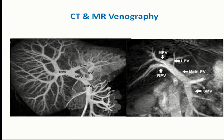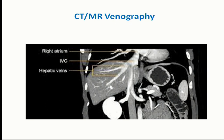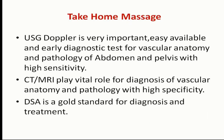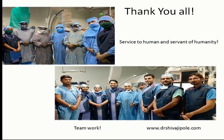Compared to the hepatic vein, the portal vein is very low pressure. When there is portal hypertension causing cirrhosis, we can place a stent between the hepatic vein and the portal vein — that is the TIPS procedure. On CT venography and hepatic vein flow, you can see reverse flow in the hepatic veins. Take-home message: ultrasound Doppler is very important, easily available, and an early diagnostic test for vascular anatomy and pathology of the abdomen and pelvis with high sensitivity. CT and MRI play vital roles for diagnosis with high specificity. DSA is the gold standard for not only diagnosis but also management and treatment in the same setting.